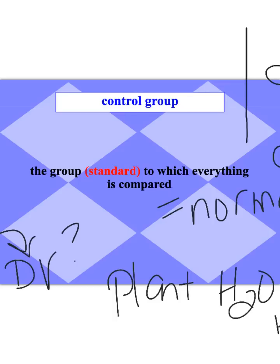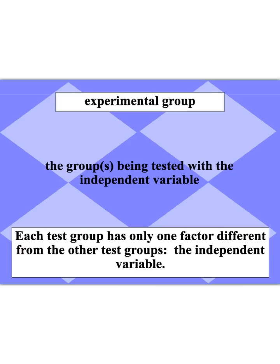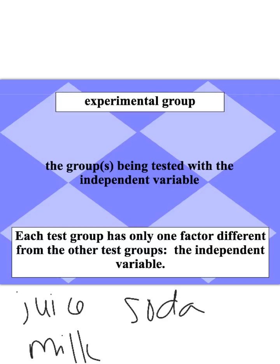Our experimental groups are the ones receiving the treatment — the ones receiving the independent variable. In the example we've been using, that would be the plants that got juice, milk, or soda. Those would all be experimental groups, and that's where we test the growth to see how it compares to the control group. Everything else about these groups would be exactly the same — the same type of plant, the same amount of soil, the same amount of liquid fertilizer. The only thing changing would be the independent variable, which is the type of liquid.